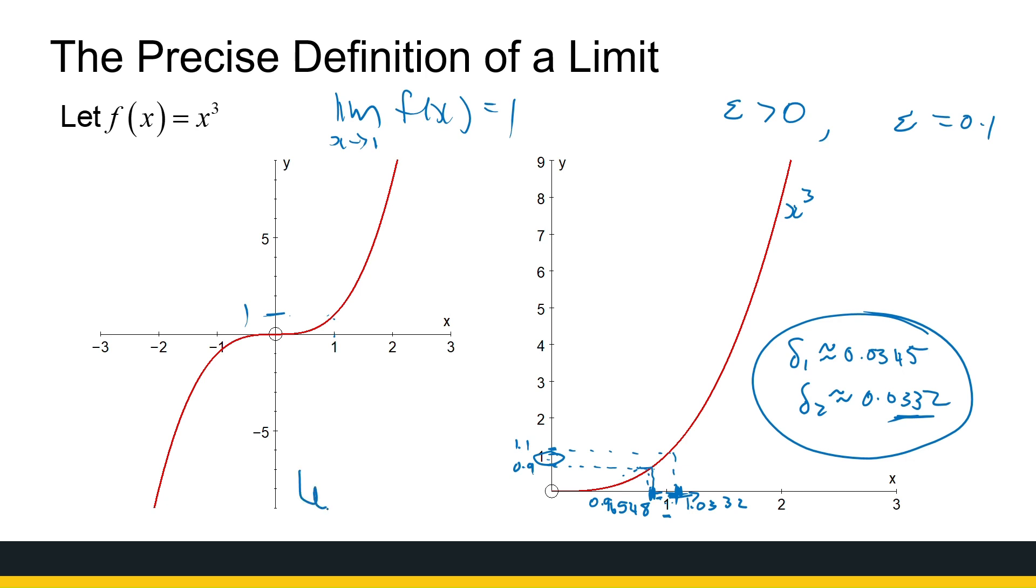We say, let delta be equal to the minimum of delta 1 and delta 2. This example is just to show you that if it's not a straight line, then it gets a little bit more complicated. We've used exact numbers here.